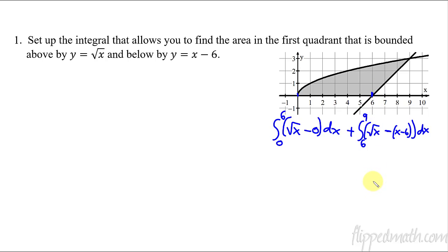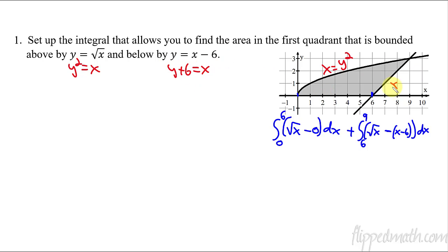Now let's figure out how to do this with respect to y. The first thing you have to do is take these equations and change them so they are in terms of y, meaning solve for x. If I square both sides, I get y squared equals x, so we have x equals y squared — that's this graph. For the other graph, if I solve for x I add six to both sides and get x equals y plus six — that's the line.